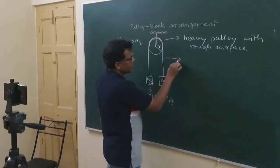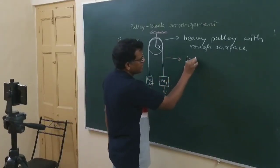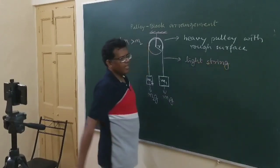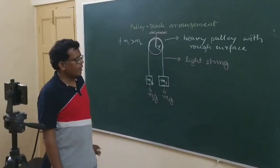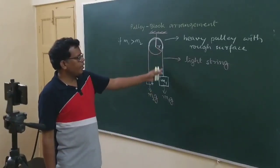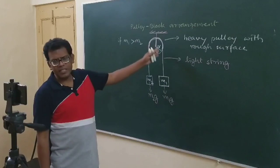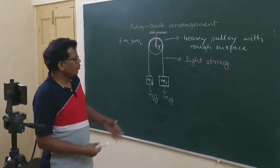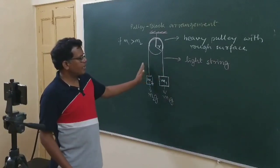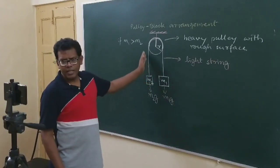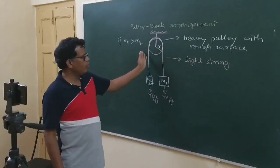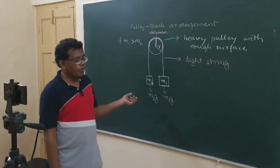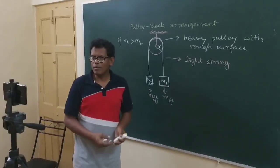The string used is definitely a light string. But this time the string will have different tension on either side of the pulley. In the previous arrangement, we considered the same tension on both sides of the string — on either side of the pulley, the string portions had the same tension. But now the string portions will not have the same tension.